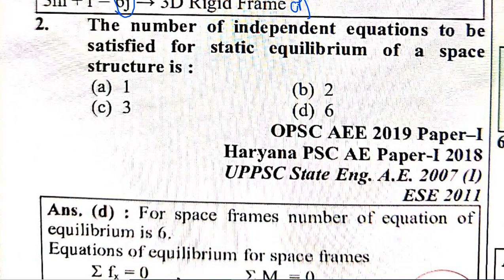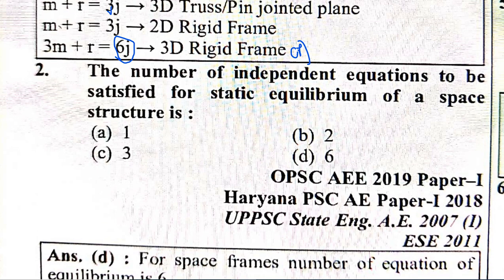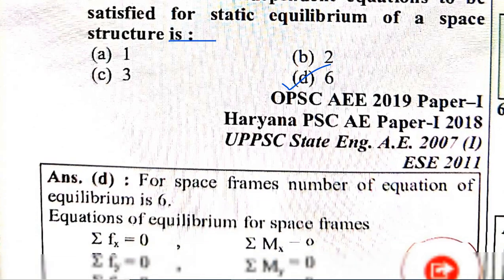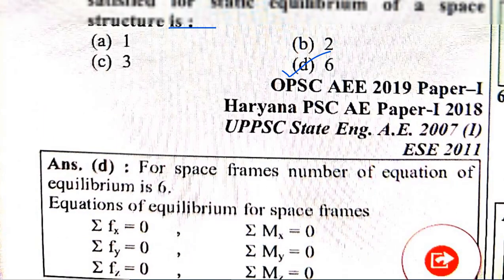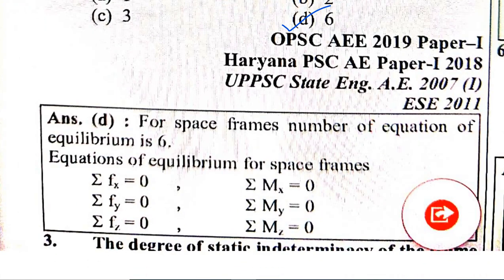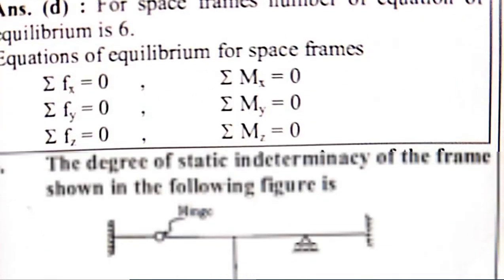Question 2: The number of independent equations to be satisfied for static equilibrium of a space structure. The answer is 6 — option C is correct. The six equations are: summation of forces in x = 0, summation of forces in y = 0, summation of forces in z = 0, summation of Mx = 0, summation of My = 0, and summation of Mz = 0.